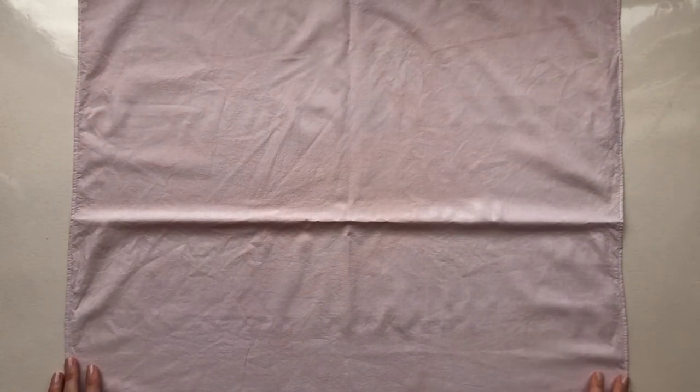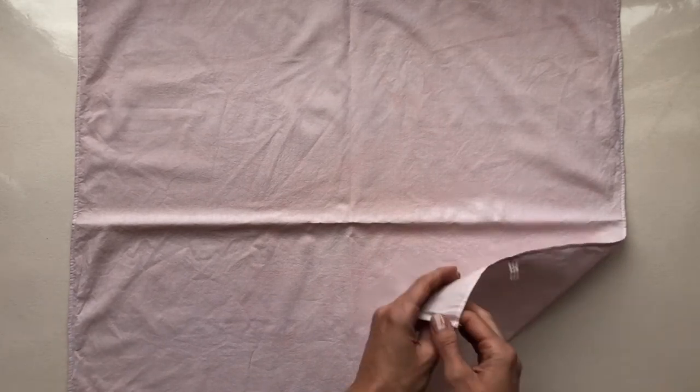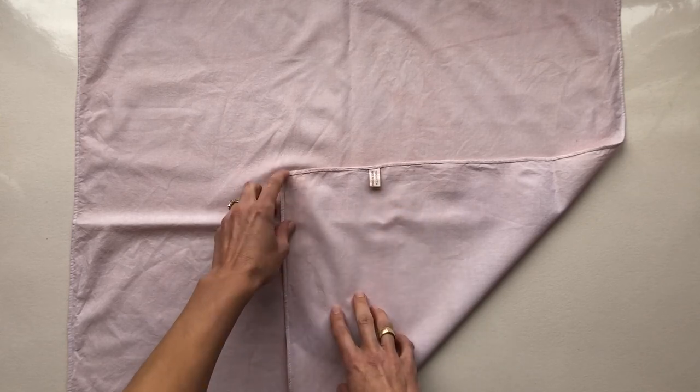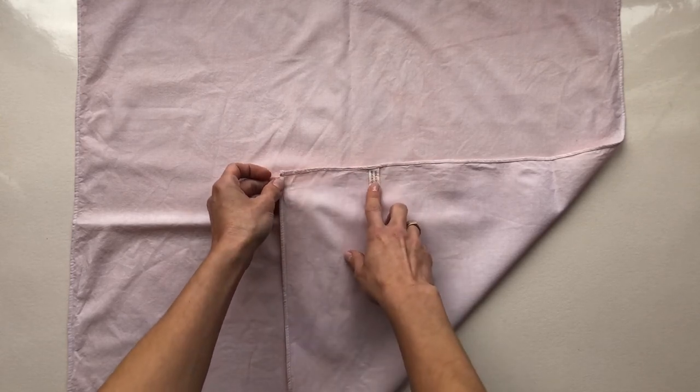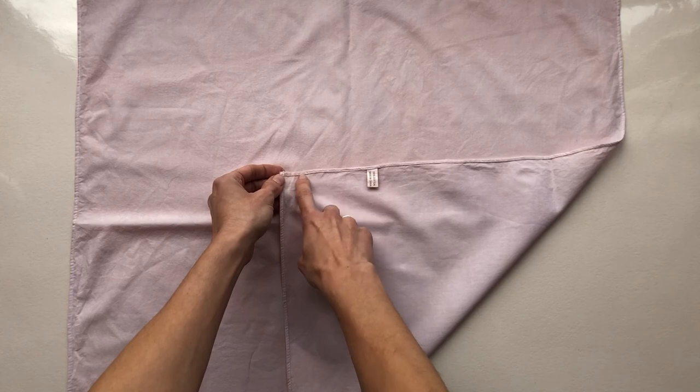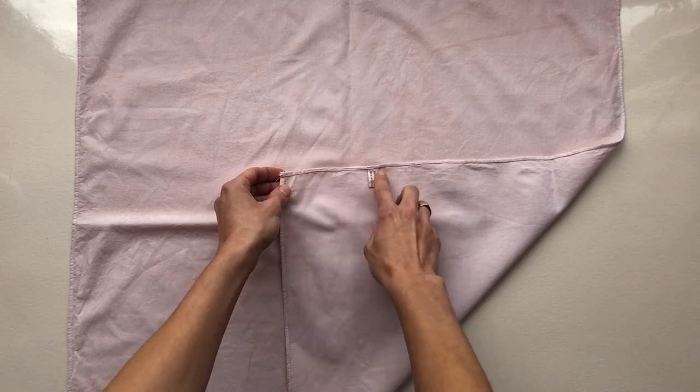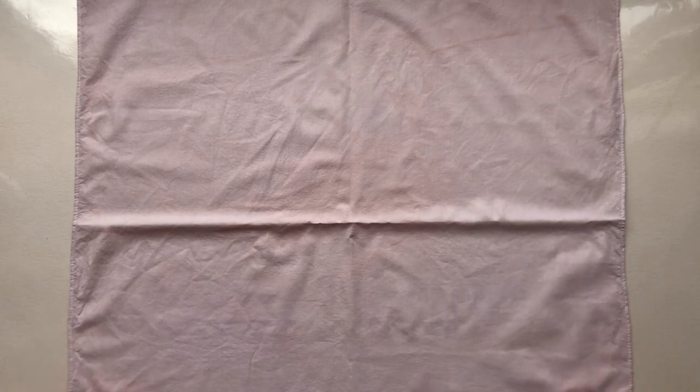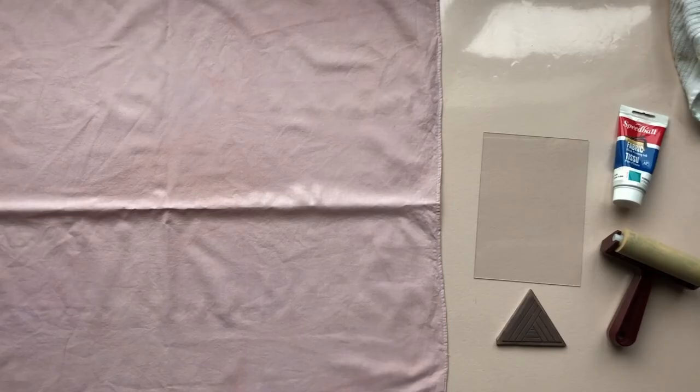The other thing to make note of is there is a front and a back to these bandanas. So take a look for the side with the tag, and the seam where the edge looks like this, and that should be the back side. Okay, so time to start printing.